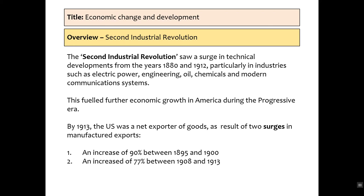By 1913, the USA was a net exporter of goods as a result of two surges in manufactured exports. Firstly, a 90% increase between 1895 and 1900, and secondly, a 77% increase between 1908 and 1913. A net exporter means it's sending more goods out, producing more profit for the country, and we see an increase in their GDP and the economy.